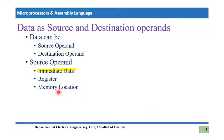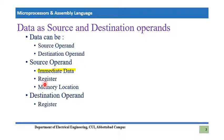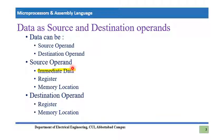The source operand can also come from a memory location — for example, if we need to manipulate information already stored in memory, we fetch that information into the microprocessor. The destination operand can be a register or a memory location. Importantly, destination can never be immediate data, because destination requires a storage place for output, whereas immediate data is already a form of input. So destination operand has only two options: register or memory location.